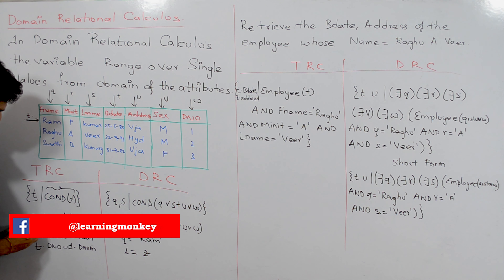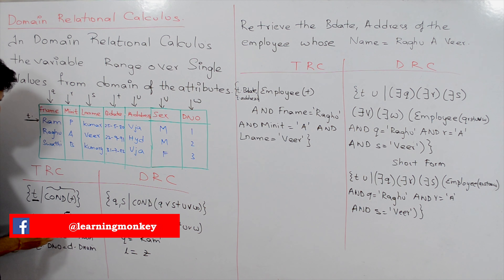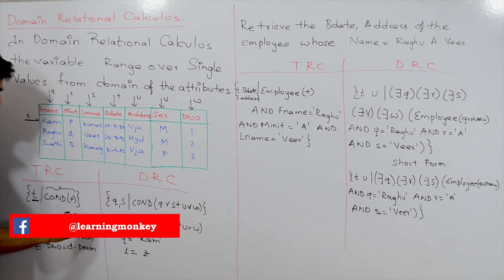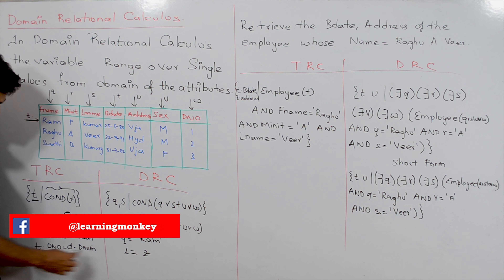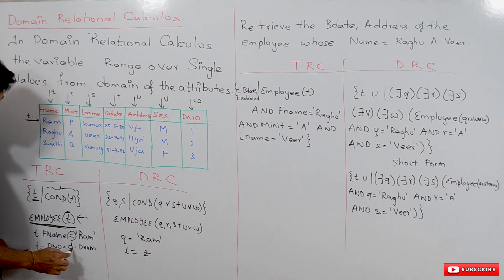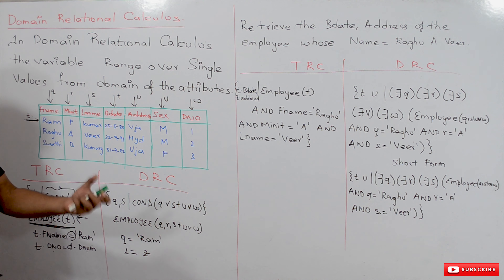One atom of the formula is 'employee(t)', which is the range relation — meaning the tuples assigned to t belong to the relation called employee. The value stored in t ranges over the relation called employee. Another kind of atom is a comparison condition such as 't.fname = RAM', or 't.tnumber = d.dnumber'. These are the kinds of formulas that can be used in the condition part.